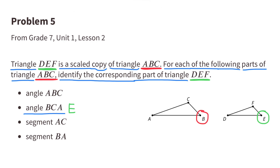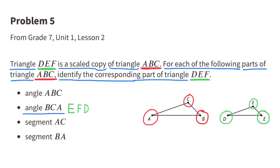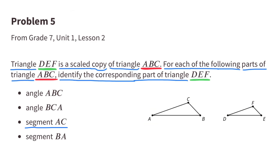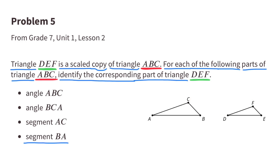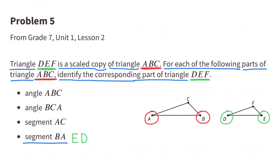For segment BC: B and E, C and F are corresponding angles. Segment AC corresponds with segment DF. Segment BA corresponds with segment ED. Angle B corresponds with angle E, and angle A corresponds with angle D.